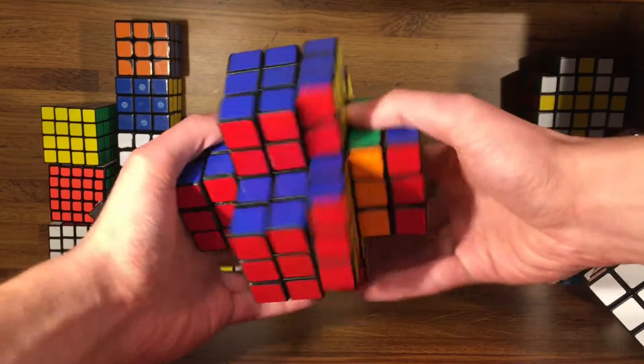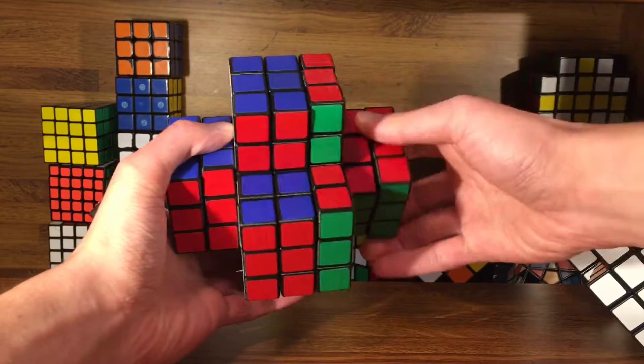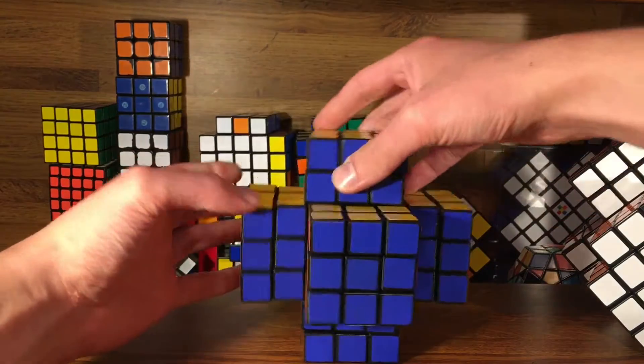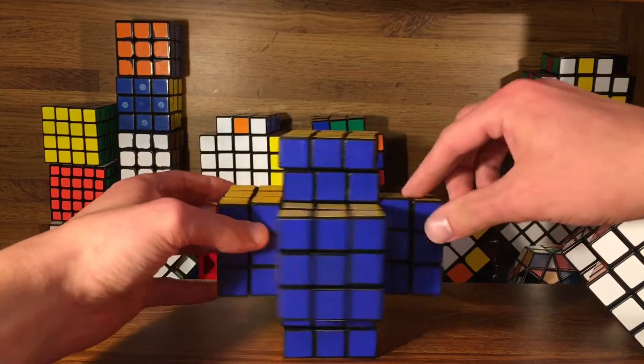Each of these layers are fully functional. The 3x3 Master Cross Cube has 96 visible pieces which make up these extended layers.